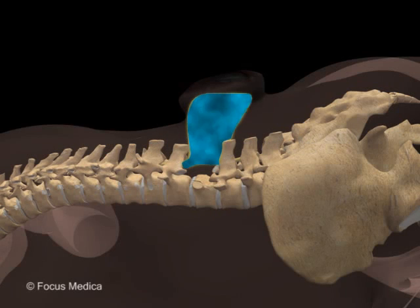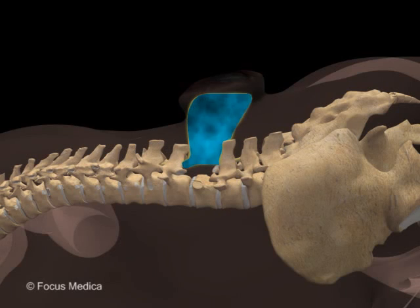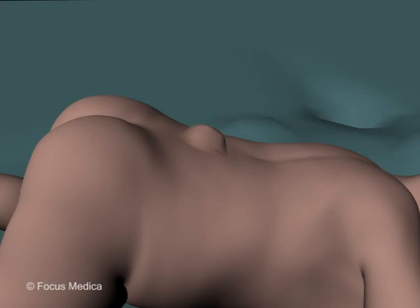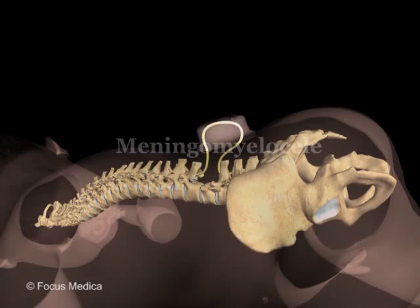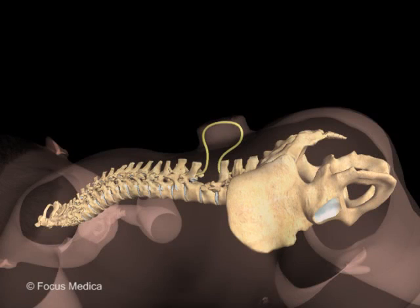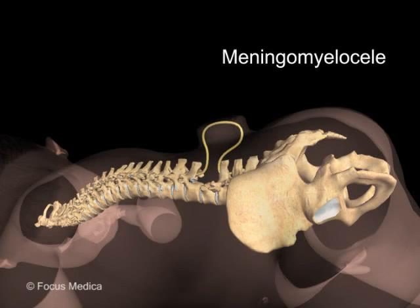Syringomyelocele is a rare form of spina bifida in which the vertebral defect is associated with an extreme form of caudal spinal cord defect. Meningocele can be associated with caudal spinal cord defects and present as meningomyelocele.